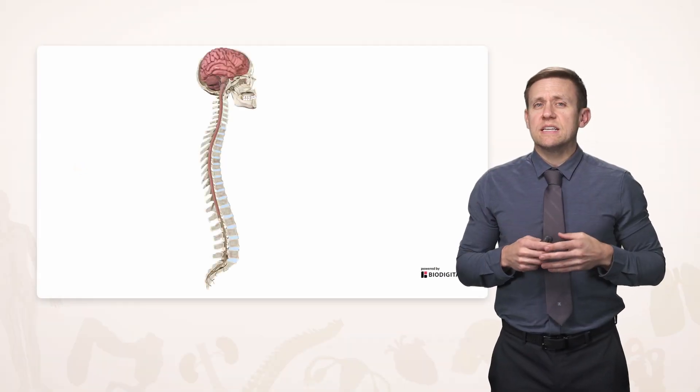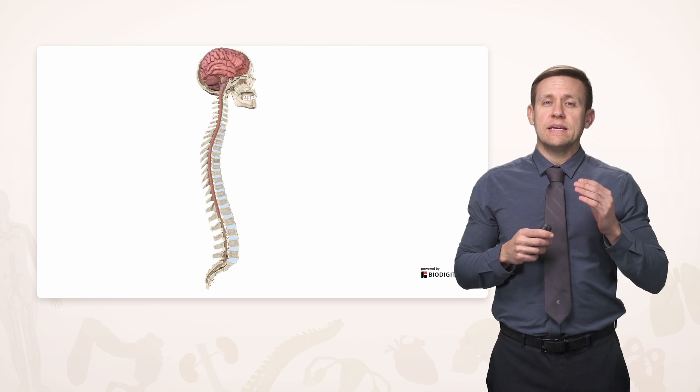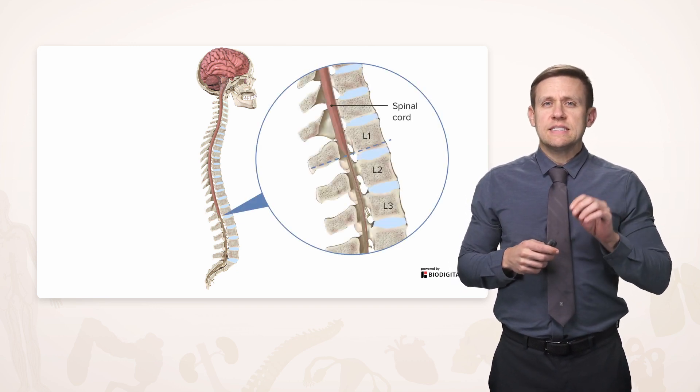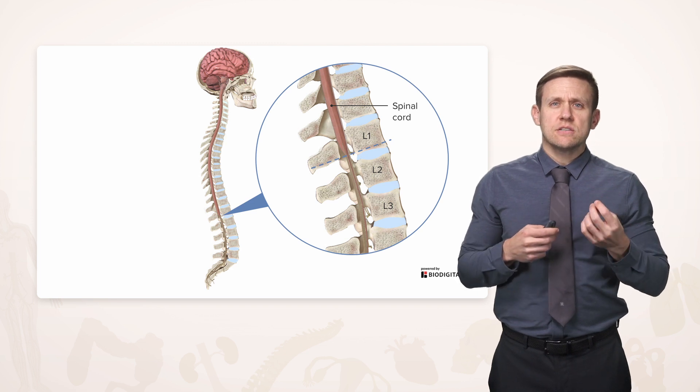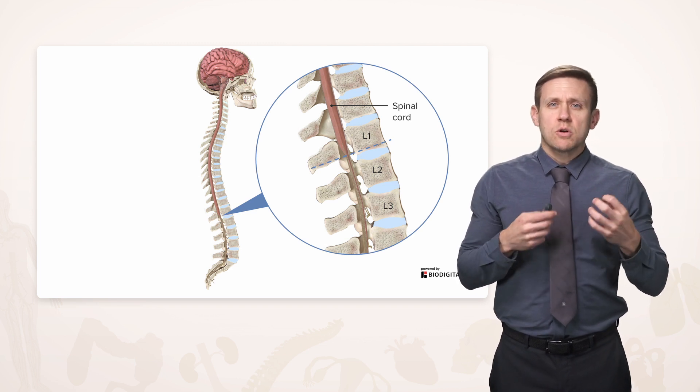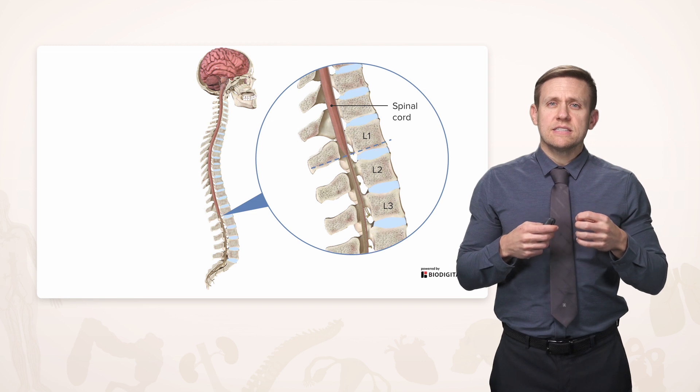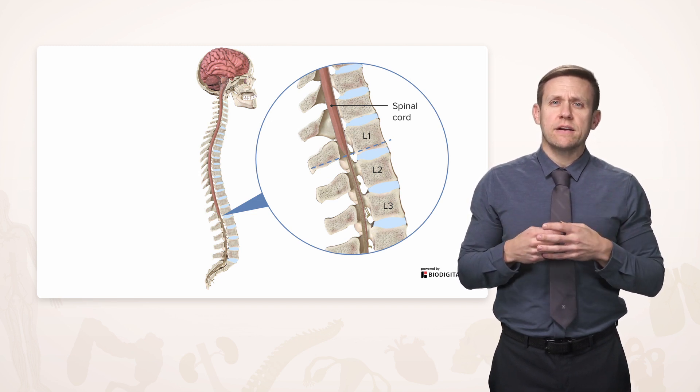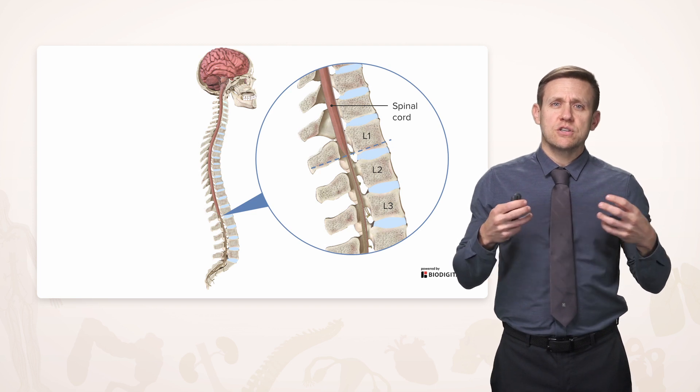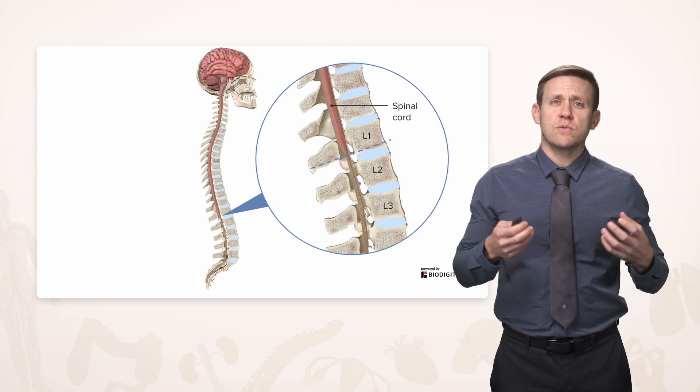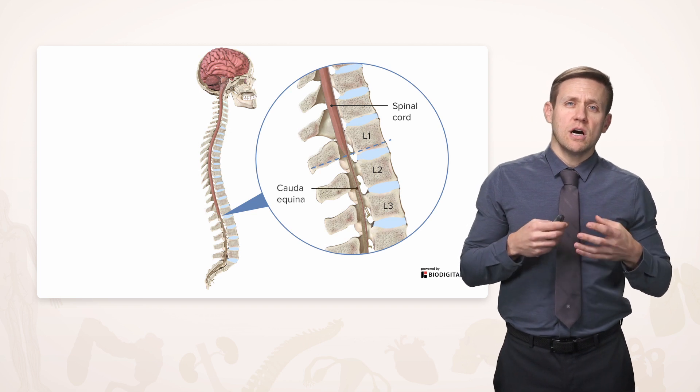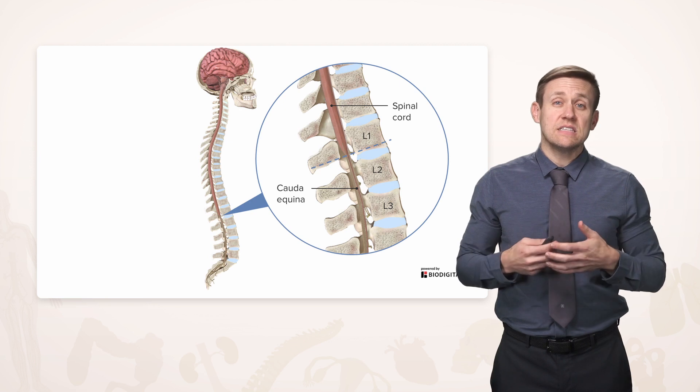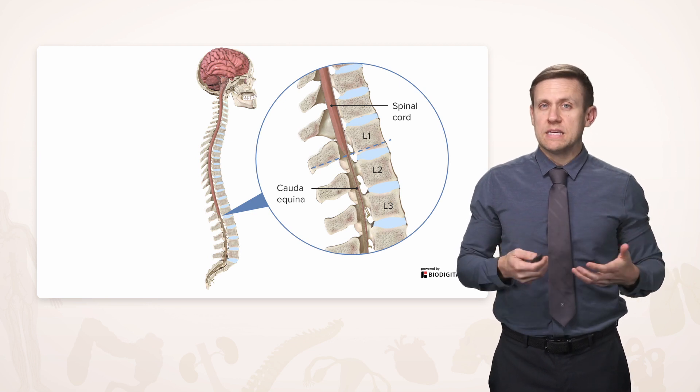The spinal cord doesn't actually run all the way down the length of the vertebral column though. As you can see here, it actually starts to end early on into the lumbar area, so that by the time you get to the L2 or L3, L4 area, it's really just a collection of individual nerves rather than a solid cord, and it gets the name cauda equina because it looks like a horse's tail, and that's essentially what cauda equina means.